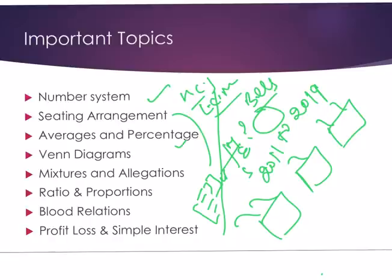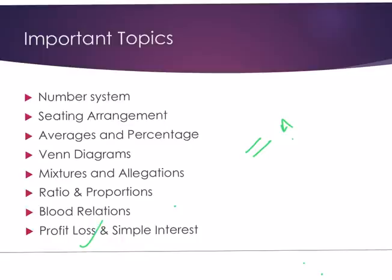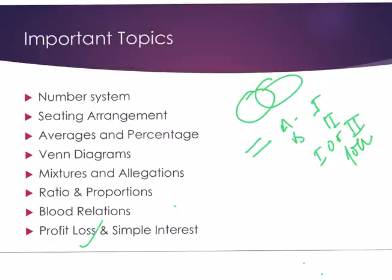When you cover Venn diagrams — every year 2 to 3 questions come from it. Once Venn diagram is clear, you can cover related topics. For statement-based questions with options like 'one follows,' 'two follows,' 'one or two follows,' 'neither one nor two' — you will be able to clear them, but you need to make a Venn diagram and clear the concept. Every year one question comes from mixture and allegation. Similarly for ratio-proportion and blood relation, there are short tricks — for example, plus denotes male, minus denotes female — and by drawing a tree diagram you can solve blood relation questions easily.